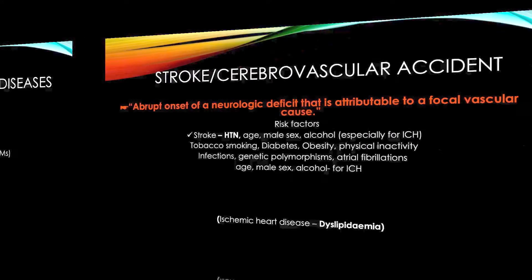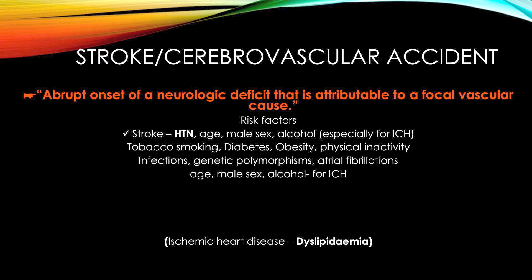Stroke is also called a cerebrovascular accident. It is the abrupt onset of a neurologic deficit attributable to a focal vascular cause. Abrupt means sudden. Neurologic deficits include problems with sensations, motor functions, or consciousness. Focal means a particular blood vessel is involved. Because of blood vessel problems, there is a sudden onset of neurological deficit — that is called a stroke.